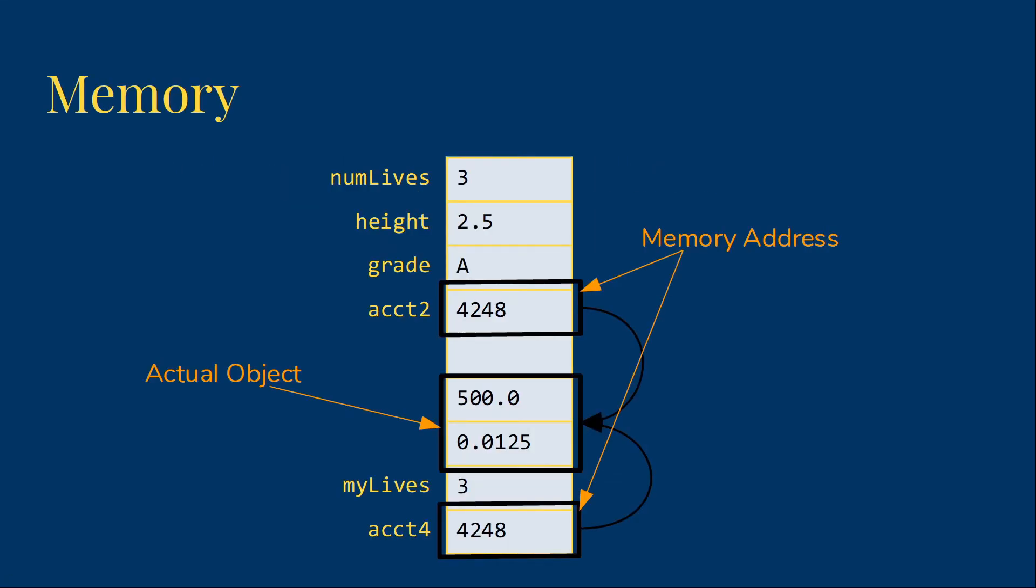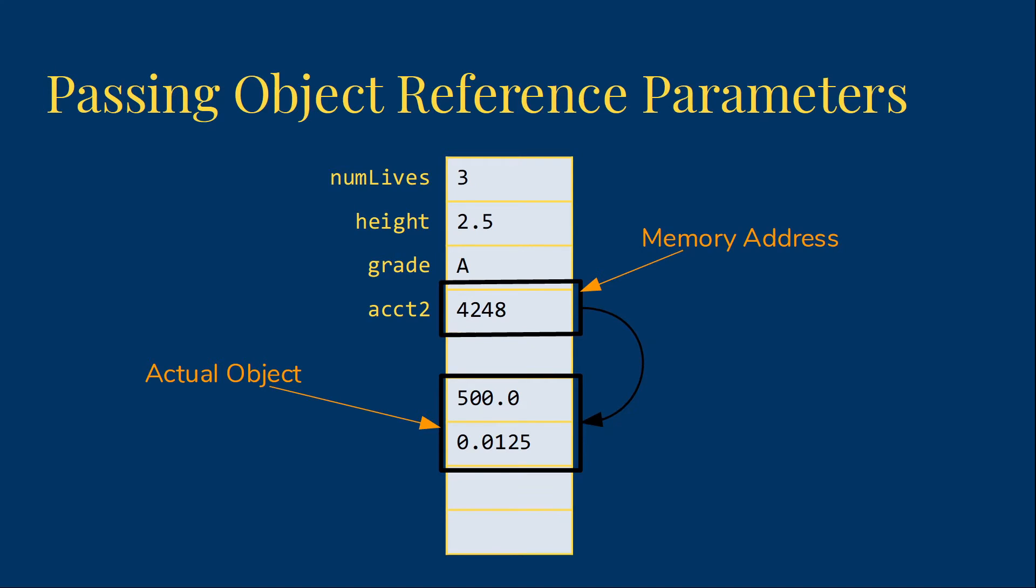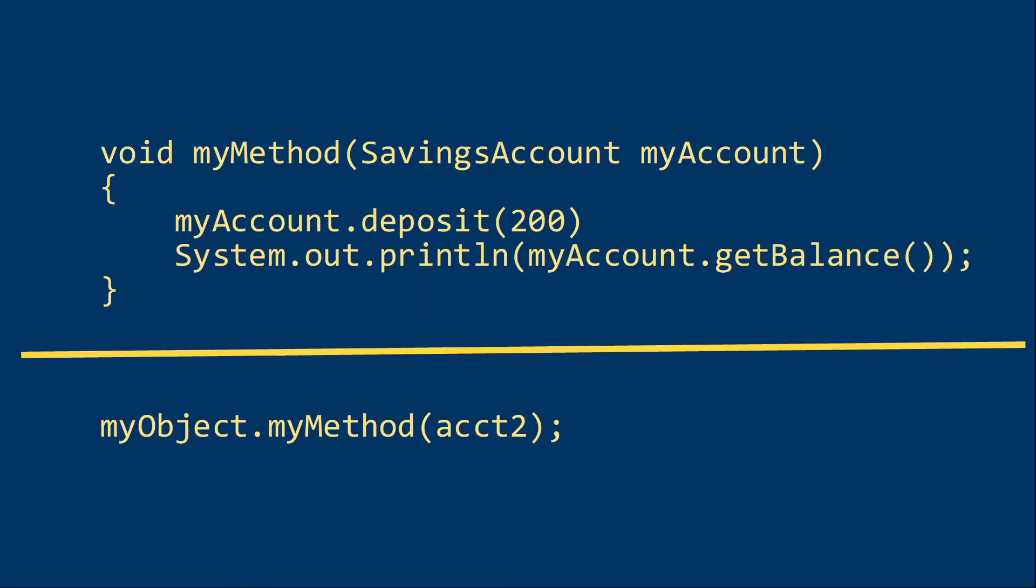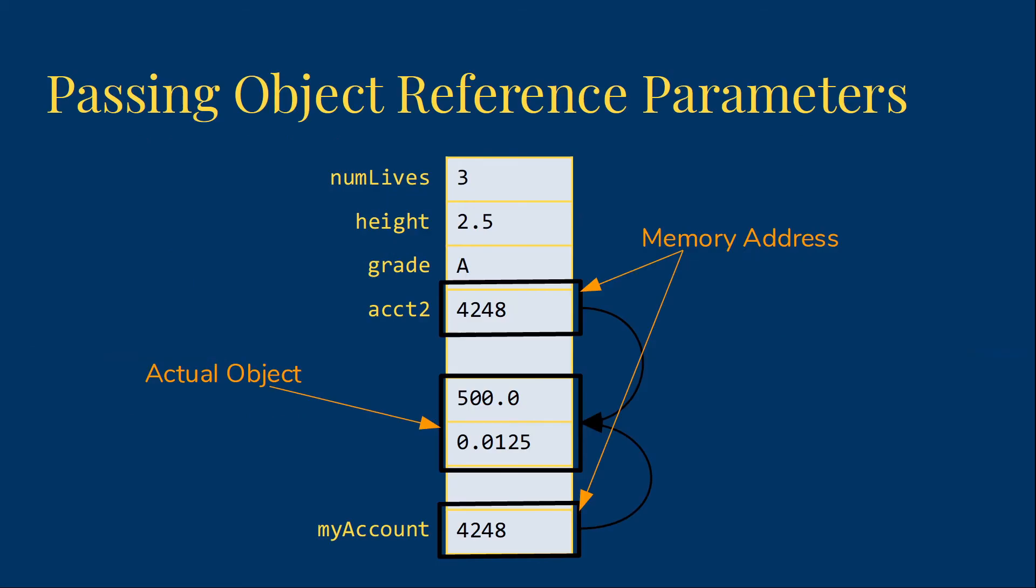The same thing is true of passing object reference parameters. We're still passing by value and making a copy, but we're making a copy of the reference, the memory address. So here I have a method that takes a savings account parameter and calls deposit. And so when I call that method with account2, I'm going to get a copy of the address in the myAccount variable.